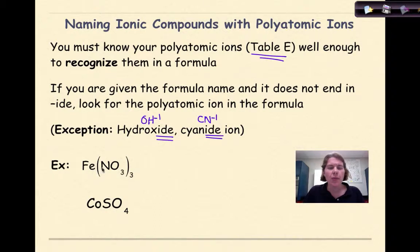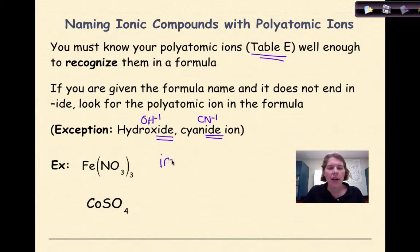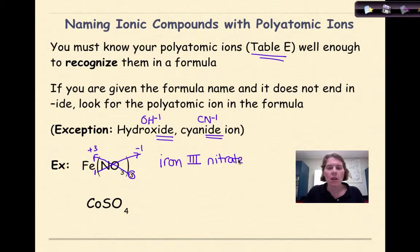For Fe(NO3)3 — iron is a transition metal, so the name needs a Roman numeral. NO3 is nitrate, which you can look up on table E. Uncrisscrossing shows Fe is plus 3, and there's an assumed subscript of 1 on NO3, so its charge is minus 1. The name is iron(III) nitrate. Always go back and check that everything matches on your periodic table and table E.